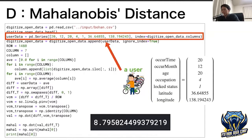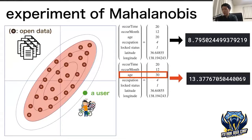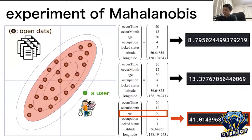The user data used this time is arbitrary: occur time is 20:00, month is December, age is 20, occupation is 4 which means working adult, and lock status is 1 meaning locked. As an experiment, I set the age only to 30 and recalculate the score. The score increases a little. From this result, I create a graph to observe the change in safety score by Mahalanobis distance.